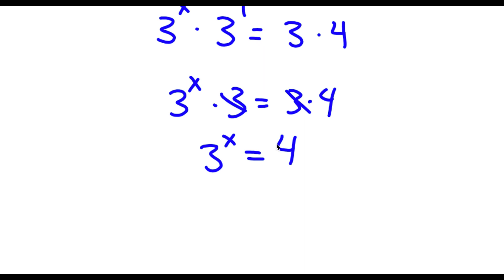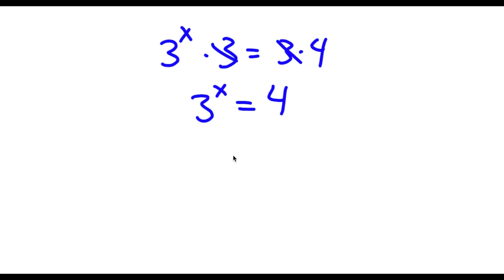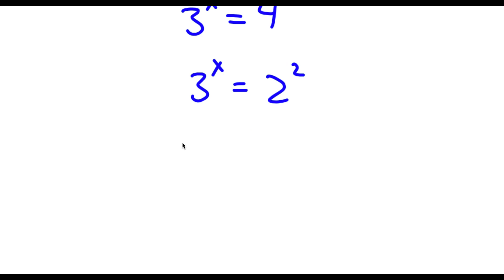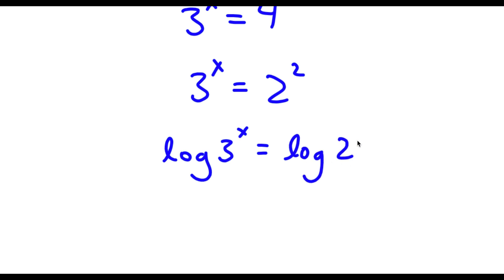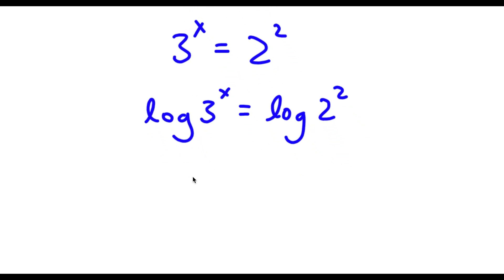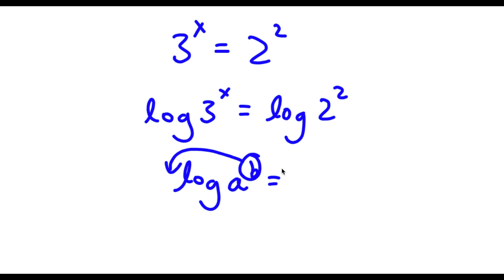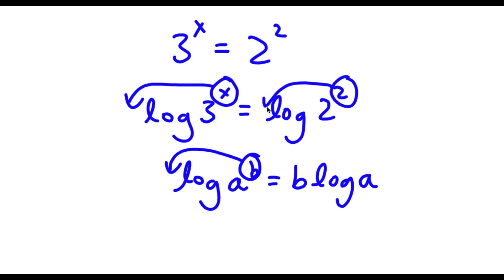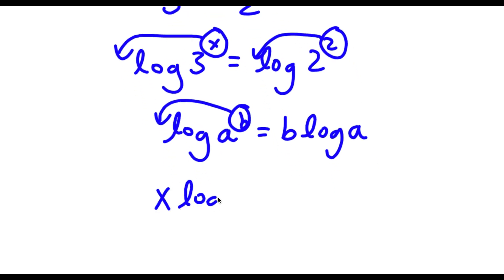Now this 4 is the same thing as 2 to the power of 2. So now I have 3 to the power of x is equal to 2 to the power of 2. To solve this, I'm going to first take the log on both sides. So now I have log 3 to the power of x is equal to log 2 to the power of 2. If I have something in the form log a to the power of b, I can move this exponent b to the front of the logarithm — this equals b times log a. So I can move the x to the front and the 2 to the front, giving x times log 3 is equal to 2 times log 2.